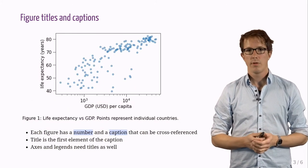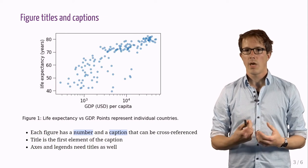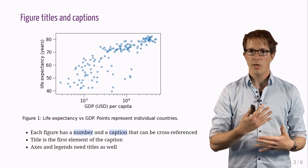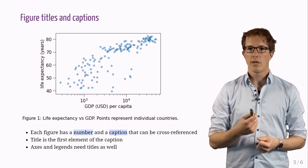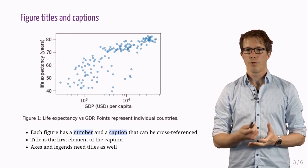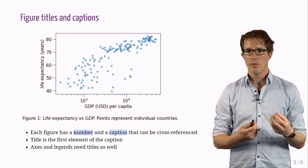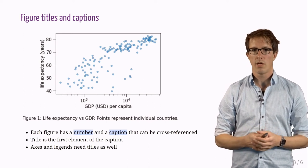Also, figures are numbered and have captions. And note that the caption is then for a figure typically below the figure. And each figure has a title. And the title is the first element of the caption. This is often forgotten. Start the caption with a title. Axes and legends need titles as well.